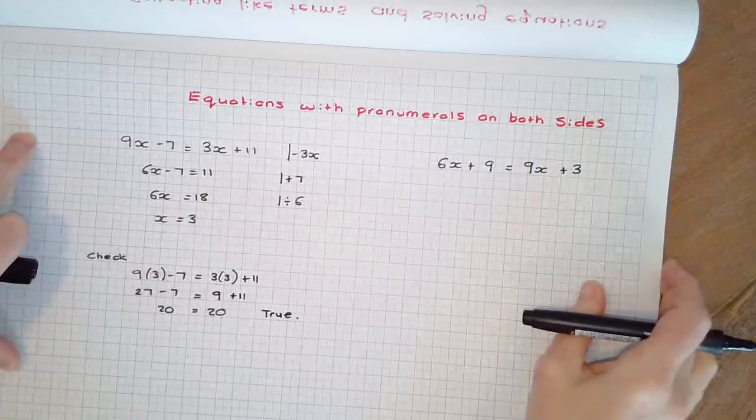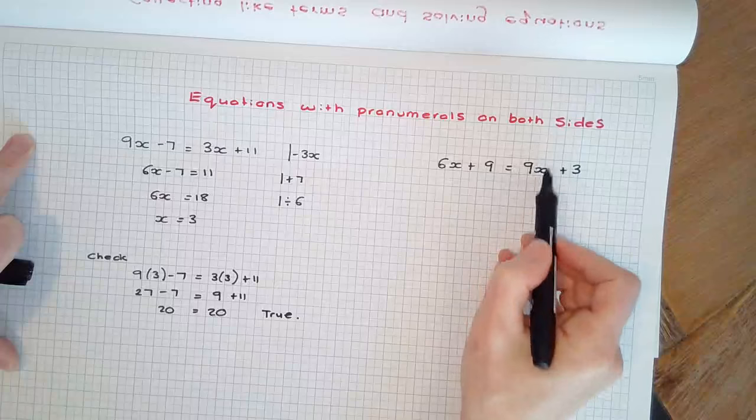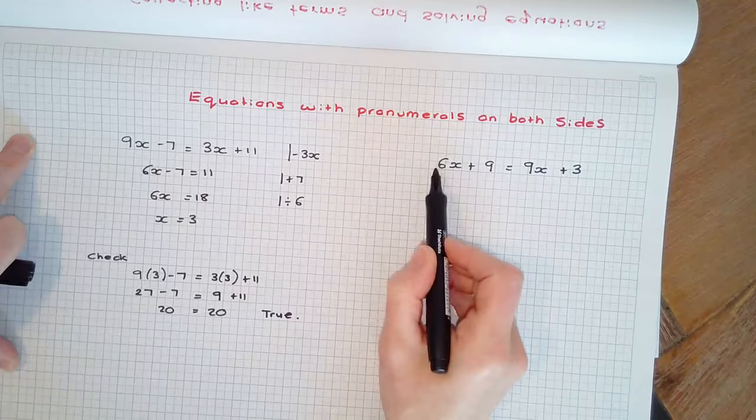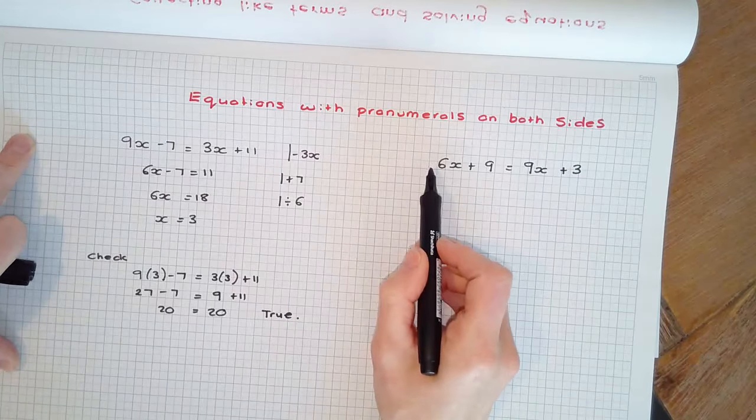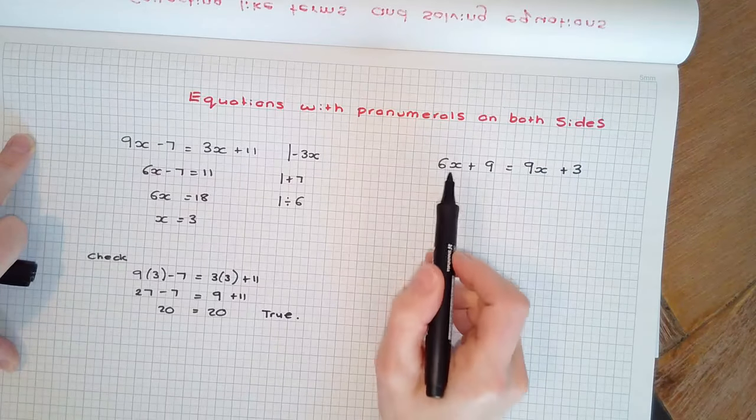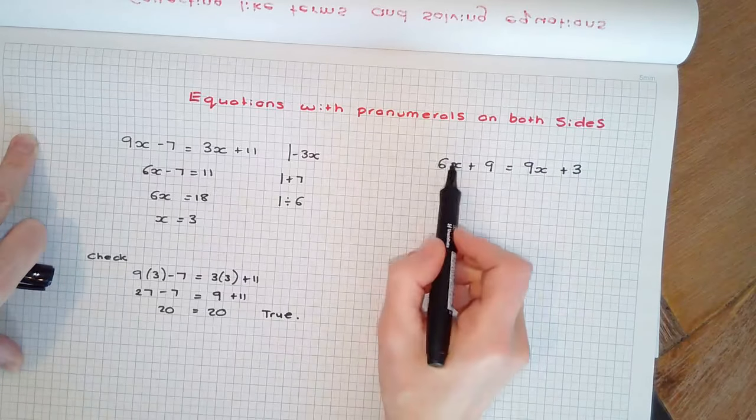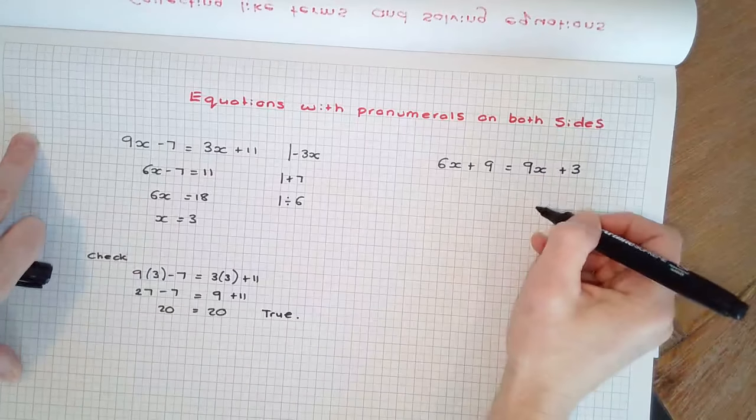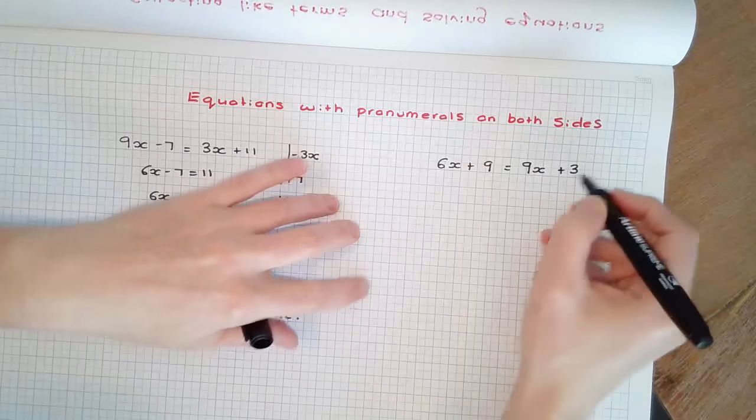Let's do another one. Now, in this case, if I subtracted 9x from both sides, I would end up with a negative 3x on the left. To avoid having to work with negatives, I'm going to subtract 6x and have the pronumeral on the right-hand side of the equation.